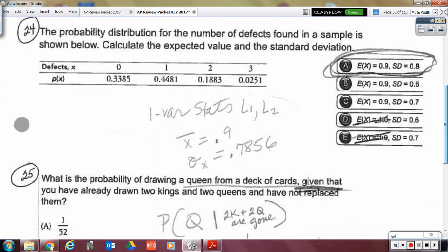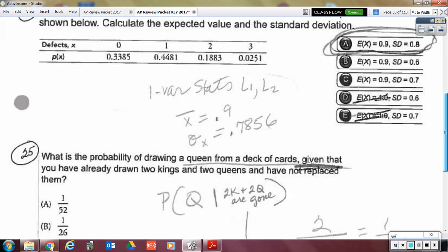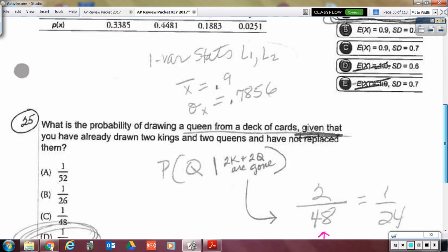And then 24. Another one of those one variable stats of list 1 with list 2's frequency.